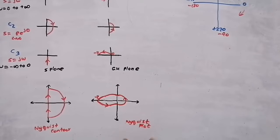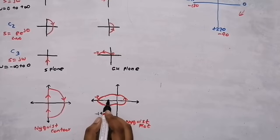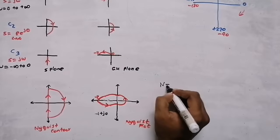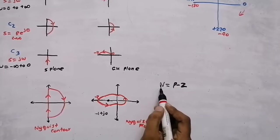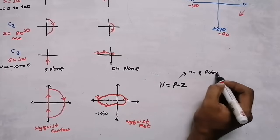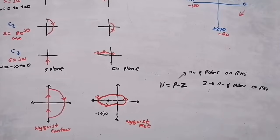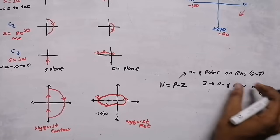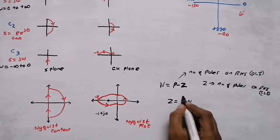After drawing the Nyquist plot, we determine stability. In the Nyquist plot we find stability with respect to the point minus 1 plus j0. The equation is N equal to P minus Z, rearranged to Z equal to P minus N. Here N is the number of encirclements around minus 1 plus j0, P is the number of open loop poles on the right hand side, and Z is the number of closed loop poles on the right hand side.